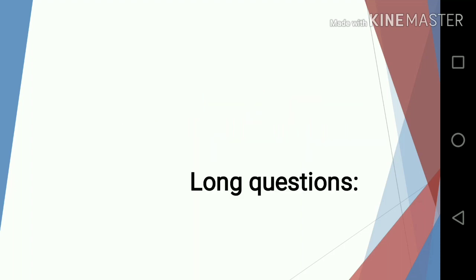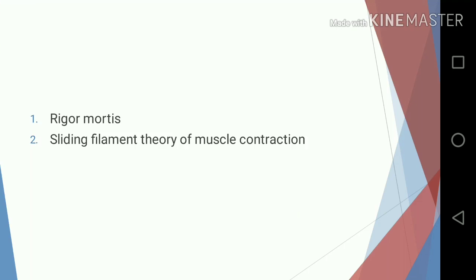Starting with long questions: one, rigor mortis; two, sliding filament theory of muscle contraction. Usually short questions will be asked from cell physiology and not muscle physiology, so most of the questions are short notes.